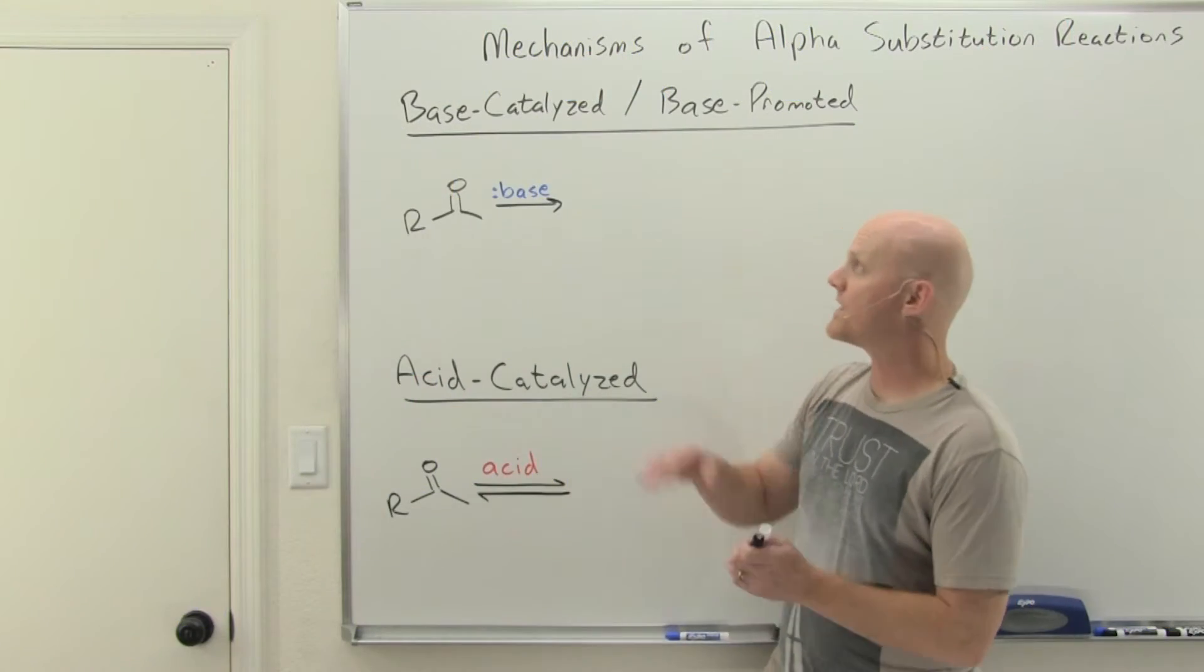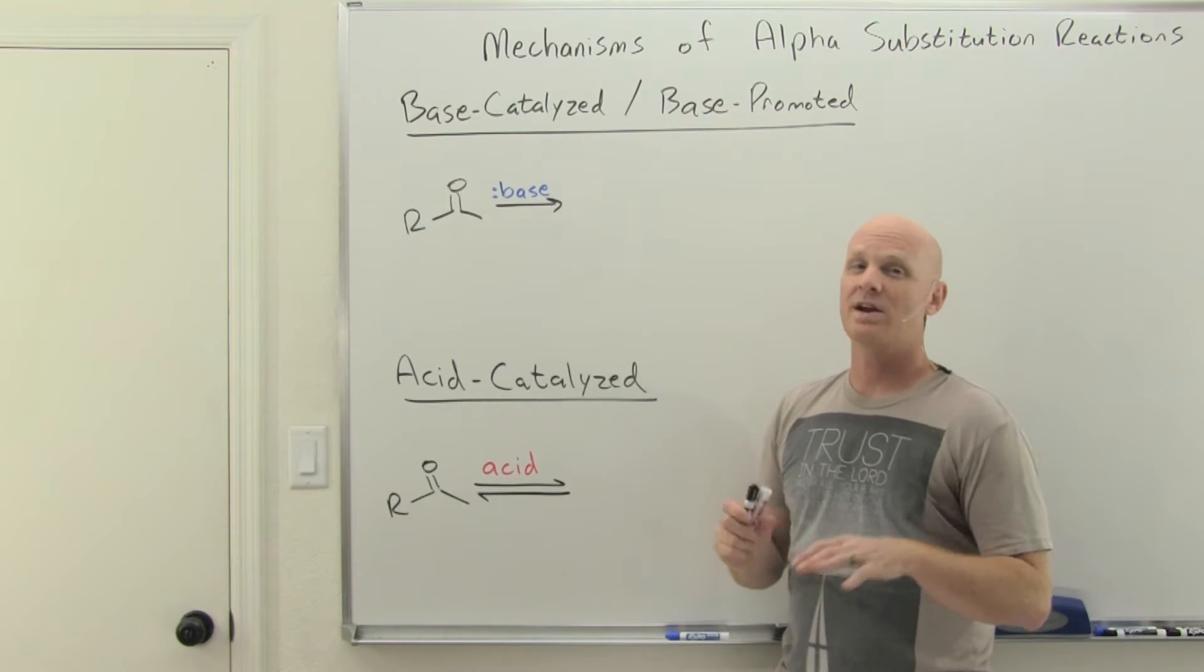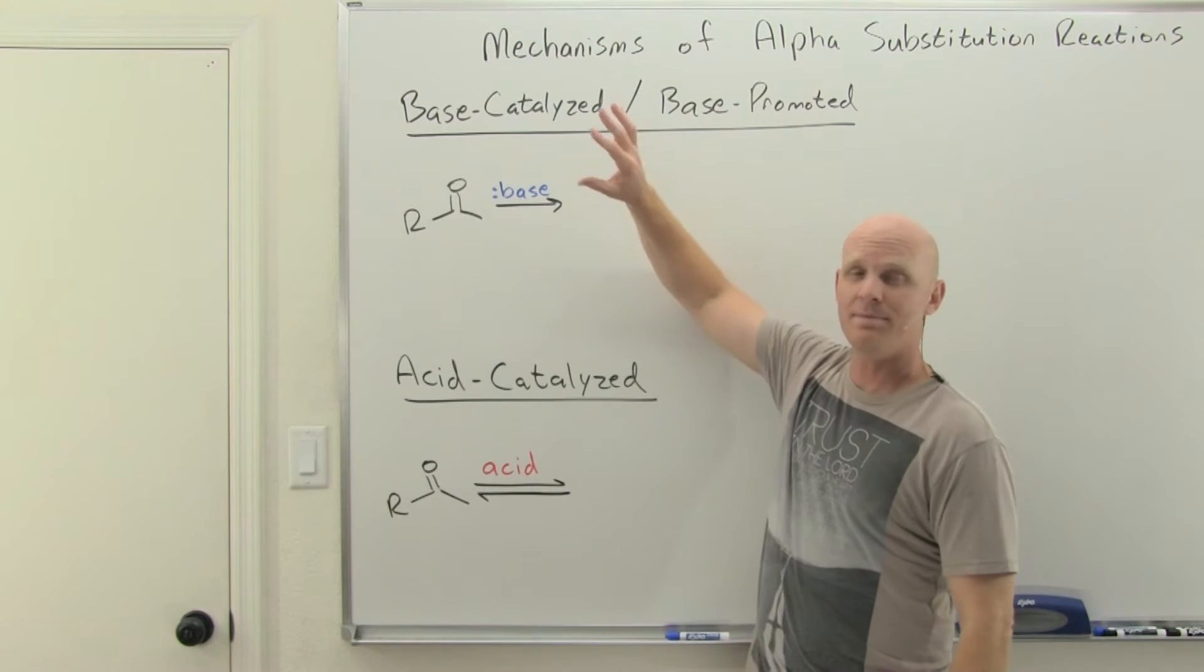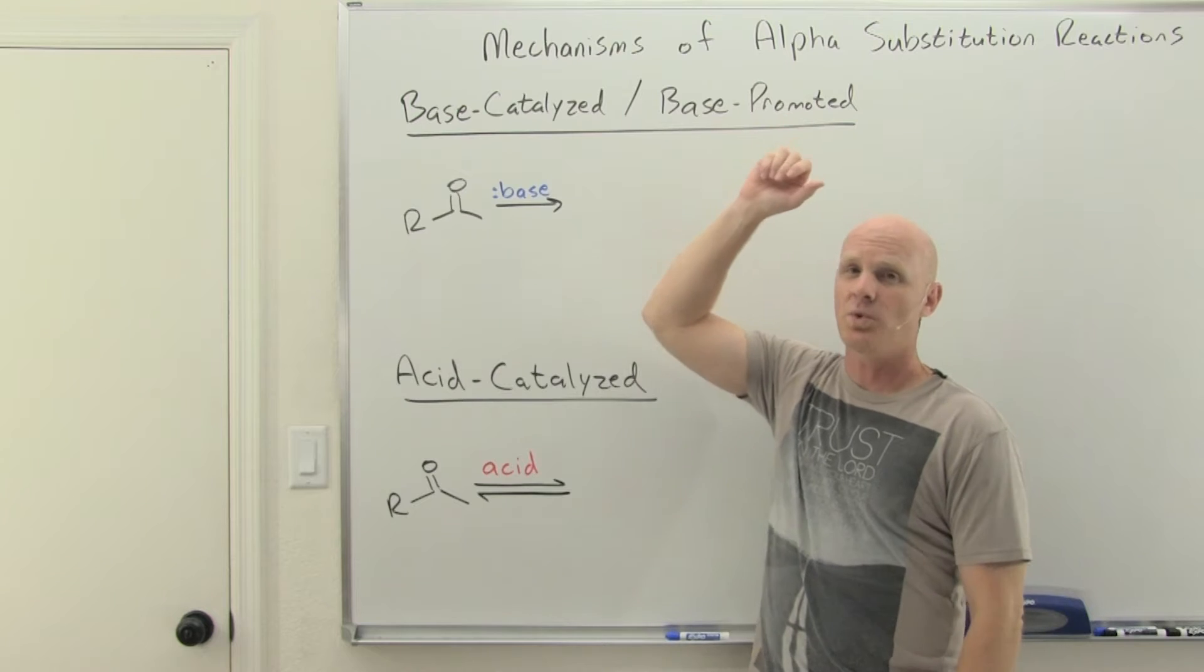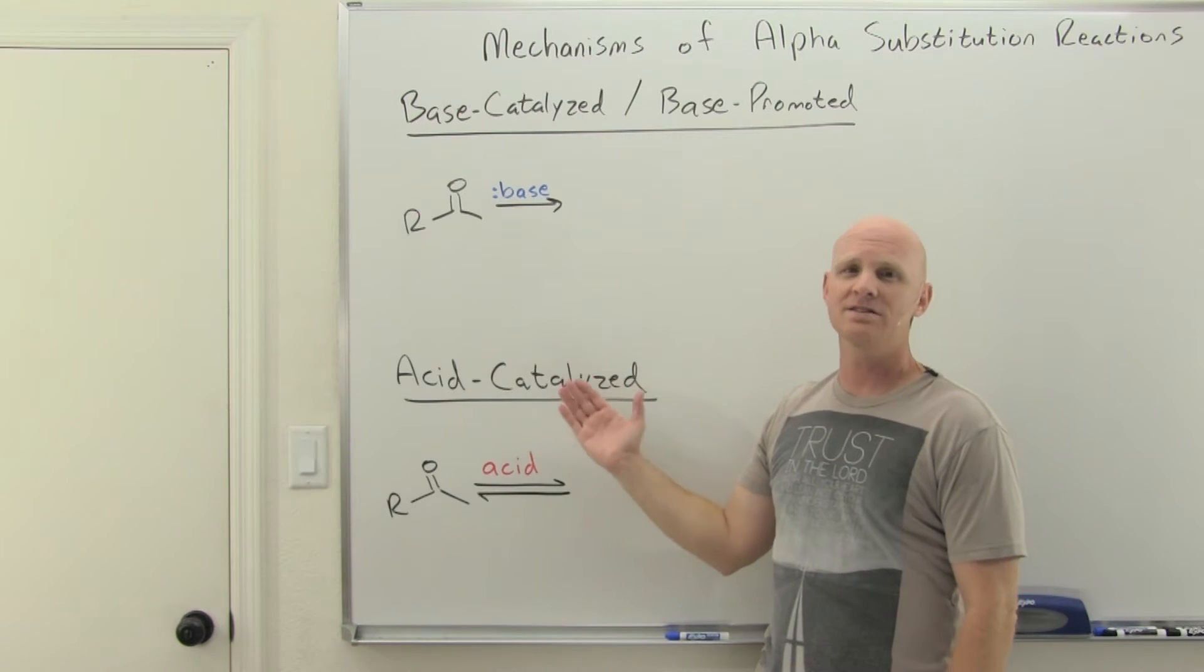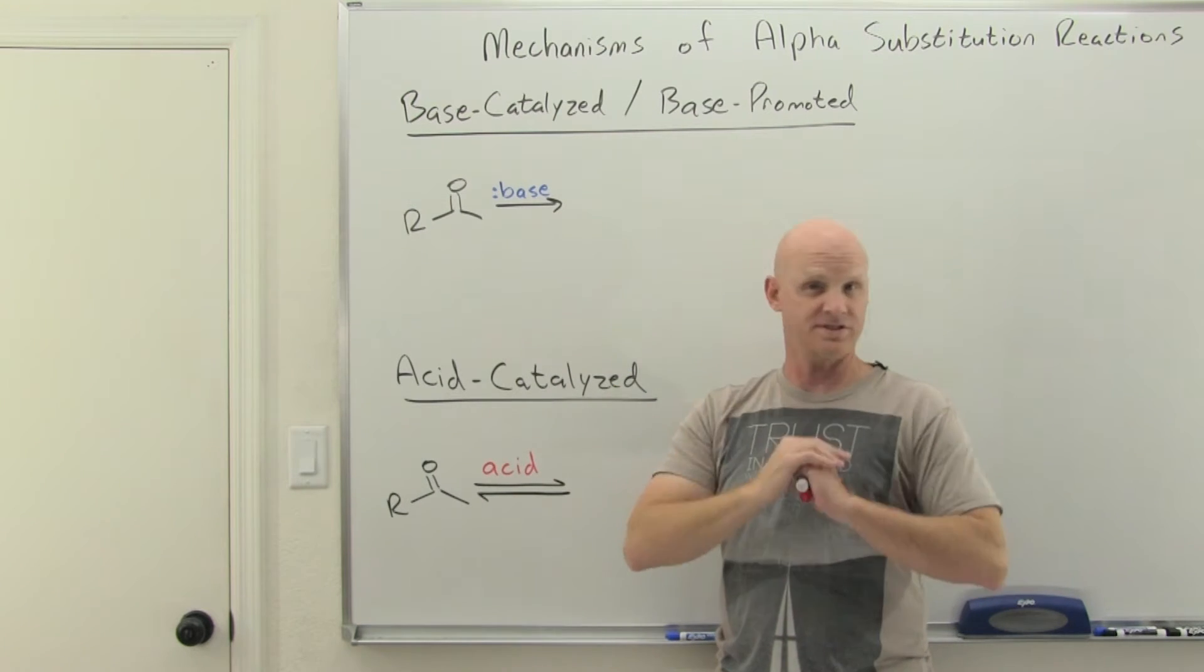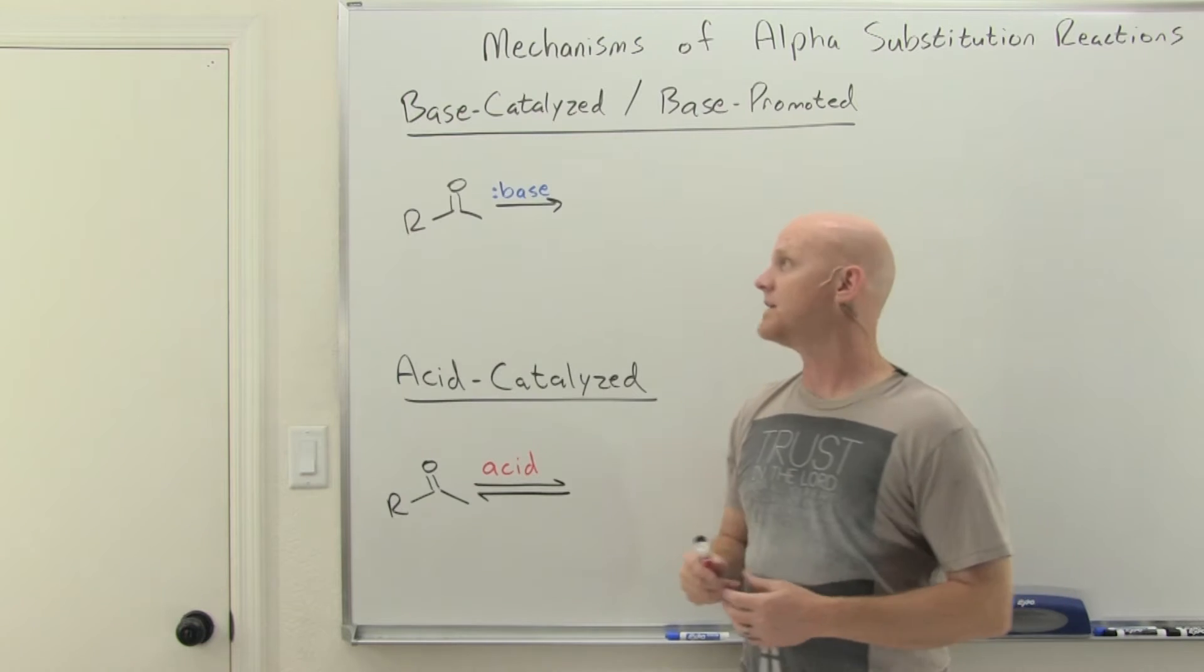We're gonna start with that base-catalyzed slash base-promoted mechanism. The big thing I said at the end of the last lesson: anytime you see a base-catalyzed or base-promoted lesson, your enolate is your nucleophile. Anytime you see an acid-catalyzed mechanism in this chapter for alpha substitution, an enol is your nucleophile. Those are your two options. That's it. Just keep that in mind.